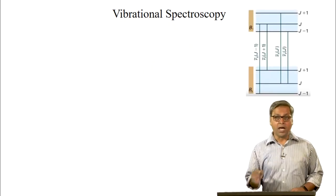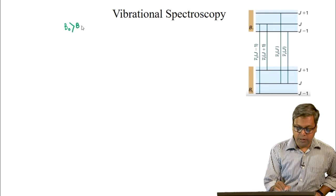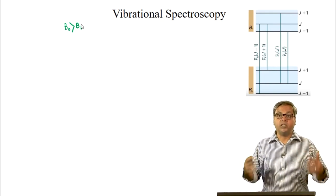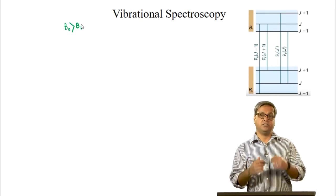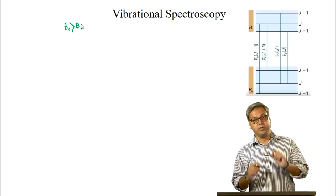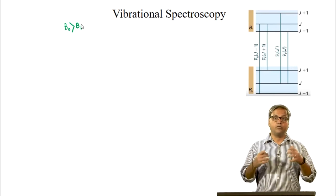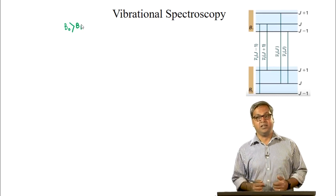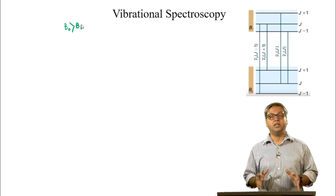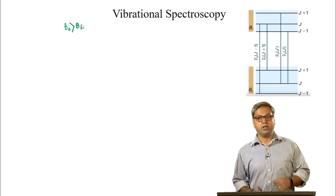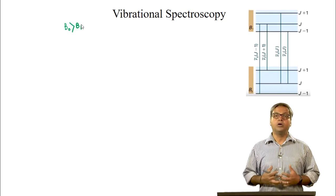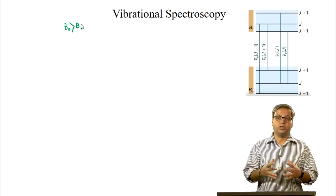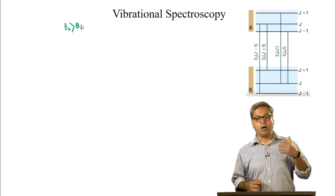So, as B0 is greater than B1, the lines in the P branch are going to spread out as we go to higher initial J states. But for the R branch, for the same reason — B0 greater than B1 — the lines are going to get closer together as we go to larger initial J states. This is exactly what we saw in the gaseous HCl spectrum.